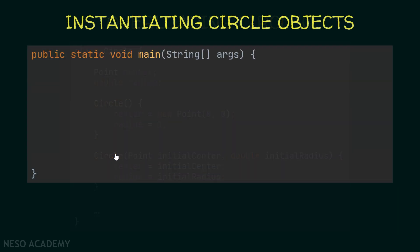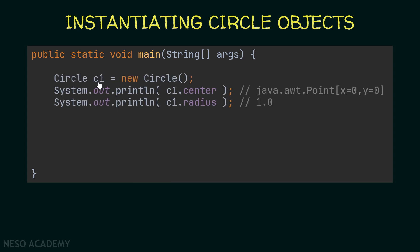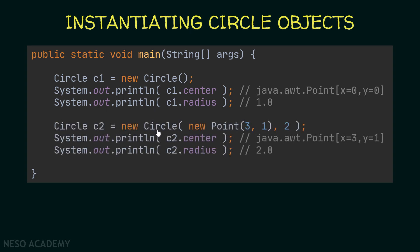In our main method, I create a Circle c1 using the no-argument constructor, then print the center and radius. The output shows center as Point(0,0) and radius as 1.0 — Java automatically knows which constructor to use based on the number of arguments. Then I create Circle c2 passing specific values, and print its center and radius to show the output.